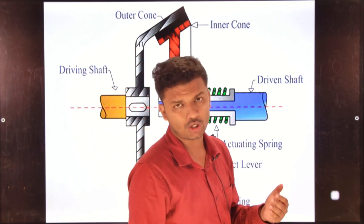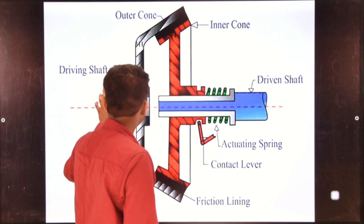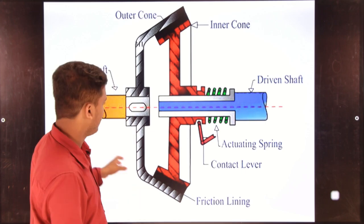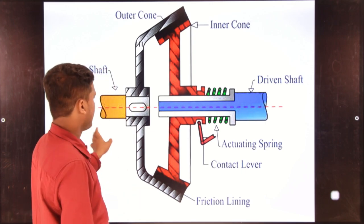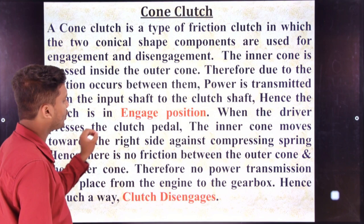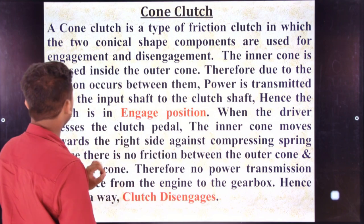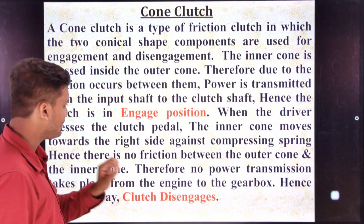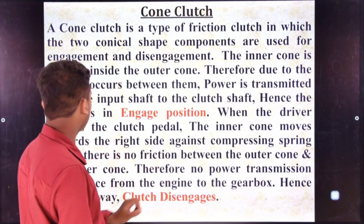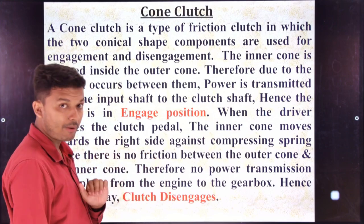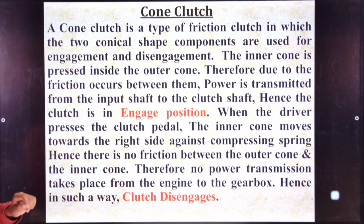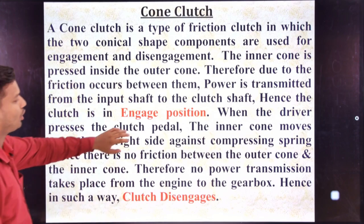Torque transmission takes place from the driving shaft to the driven shaft. When the driver presses the clutch pedal, the inner cone moves towards the right side against the compressing spring. Hence there is no friction between the outer cone and the inner cone, and therefore no power transmission takes place from the engine to the gearbox — hence the clutch is disengaged.